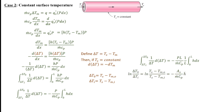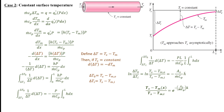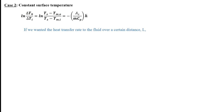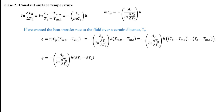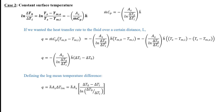Integrating gives a natural log on the left and the average heat transfer coefficient on the right. Raising everything to the power of e, we see that the delta T between the surface temperature and the average fluid temperature decreases exponentially, with the mean fluid temperature exponentially approaching the surface temperature as it flows through the pipe. To get the heat transfer rate over a certain distance, we go back to our simple equation for Q, rearrange to get an expression for ṁCp, substitute it in, and rewrite in terms of delta T. This leads to what is called the log mean temperature difference, giving us Q in terms of the average convection coefficient, the surface area, and the log mean temperature difference — the temperature difference that drives the heat transfer.